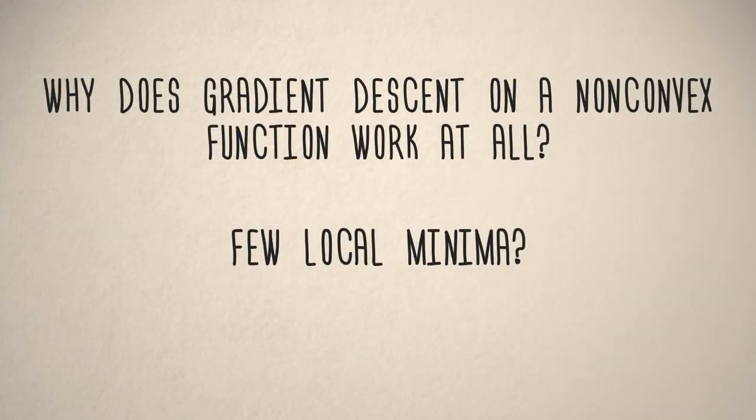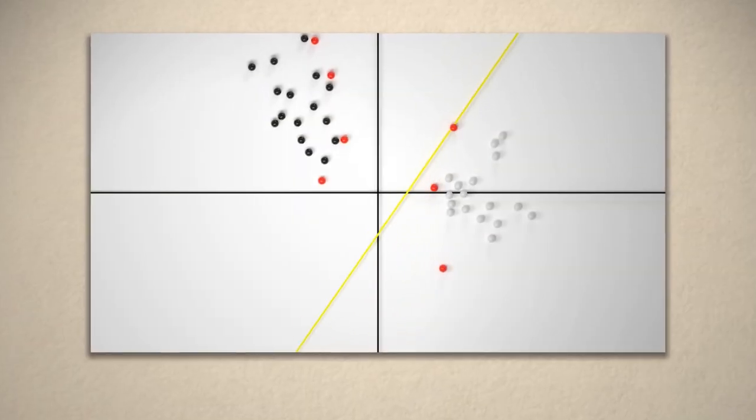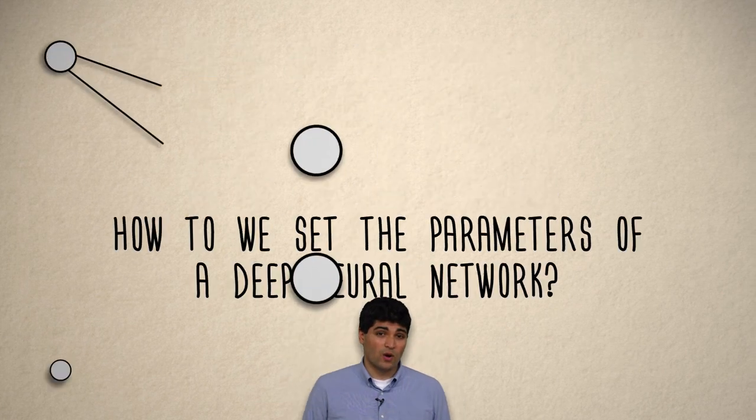It's really a way to think differently about data, to understand what kind of questions you're actually allowed to ask once you have a certain data set at hand. How do we set the parameters of a deep neural network?